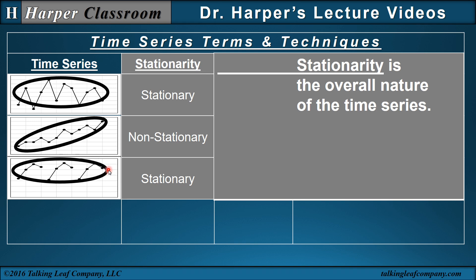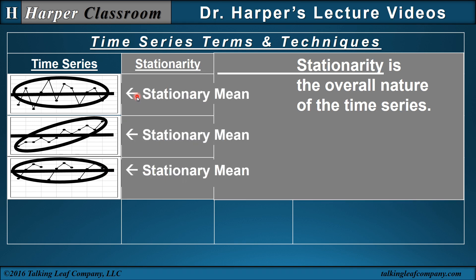A term associated with stationarity is the stationary mean. The stationary mean is the average of all the values in the range of the time series. If the variability around that stationary mean is pretty much the same from the beginning to the end, it's stationary. But in the second time series, at the beginning it's below and at the end it's high, so it's non-stationary. The third one has the same variability at the beginning as at the end, so it's stationary.